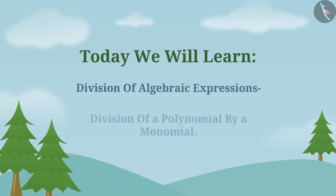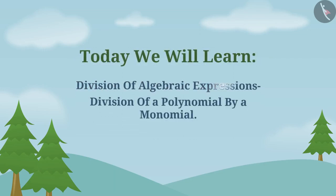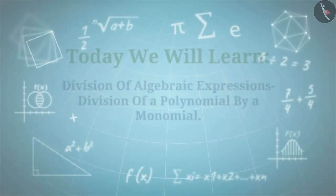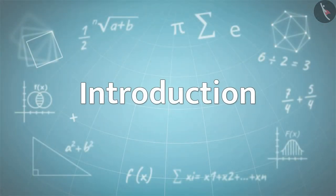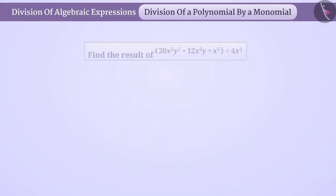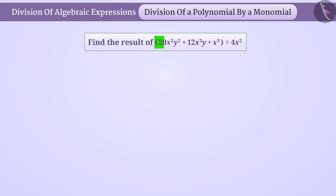Today we will learn the division of algebraic expressions, specifically the division of a polynomial by a monomial. Suppose we want to divide a polynomial by the monomial 4x squared. For this, we will first represent it in the form of a numerator and denominator, then factorize each term of the numerator.